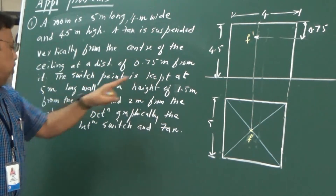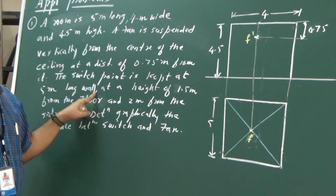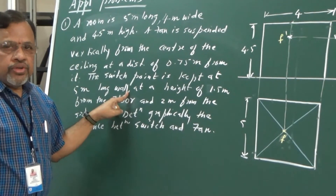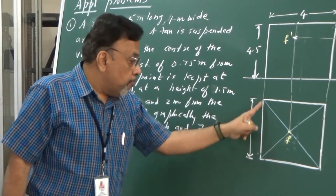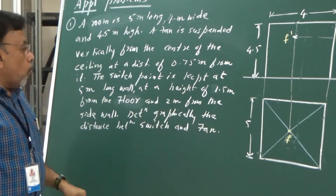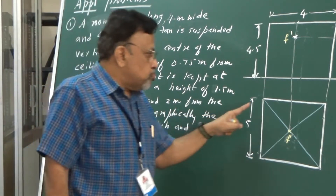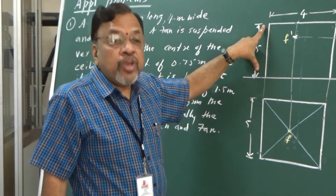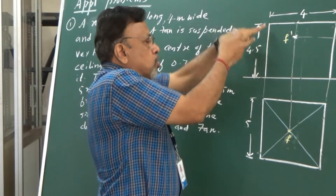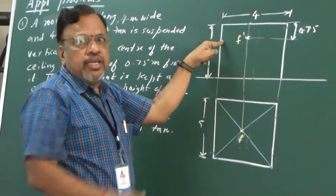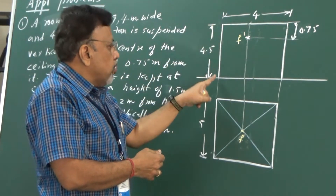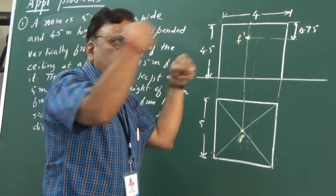The switch point is kept at the 5 meters long wall. Looking at the figure, the 5 meters long wall is found in the top view. That means the switch should be on this particular 5 meters line. It is also at a height of 1.5 meters from the floor, which I can see in the front view. This particular 5 meters wall in the top view corresponds to a side line in the front view — in the front view, it should correspond to this line, representing two walls of 4.5 meters height.